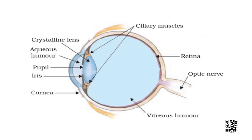The eye lens forms an inverted real image of the object on the retina. The retina is a delicate membrane with a number of light-sensitive cells — that is why we cannot see in darkness. When light falls on the retina, the light-sensitive cells get activated and generate electrical signals. These signals are sent to the brain via optic nerves. The brain interprets these signals and processes the information so that we can see the objects as they are. The image formed on the retina is real and inverted, but we perceive objects correctly because of the intelligence of our brain.